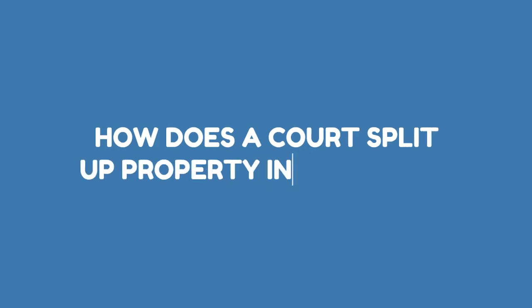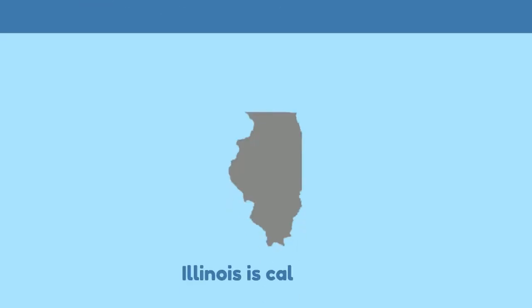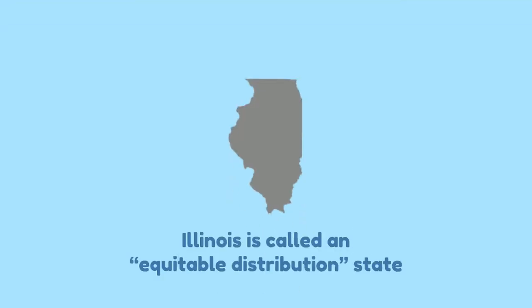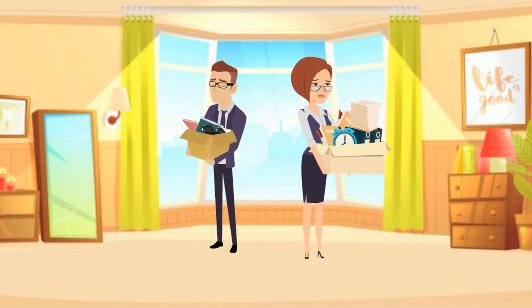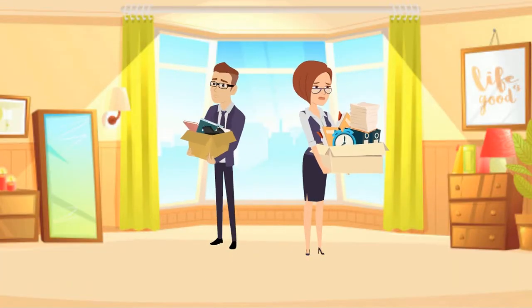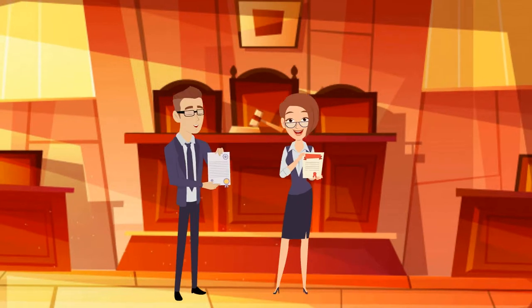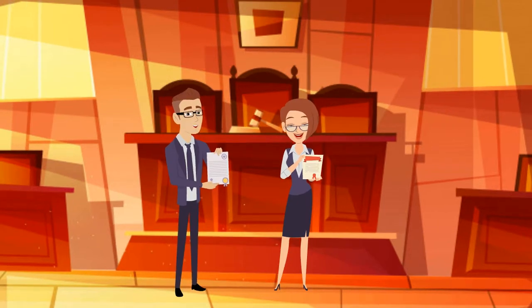How does a court split up property in a divorce? Illinois is called an equitable distribution state, meaning that when a couple divorces, their marital property must be fairly divided.